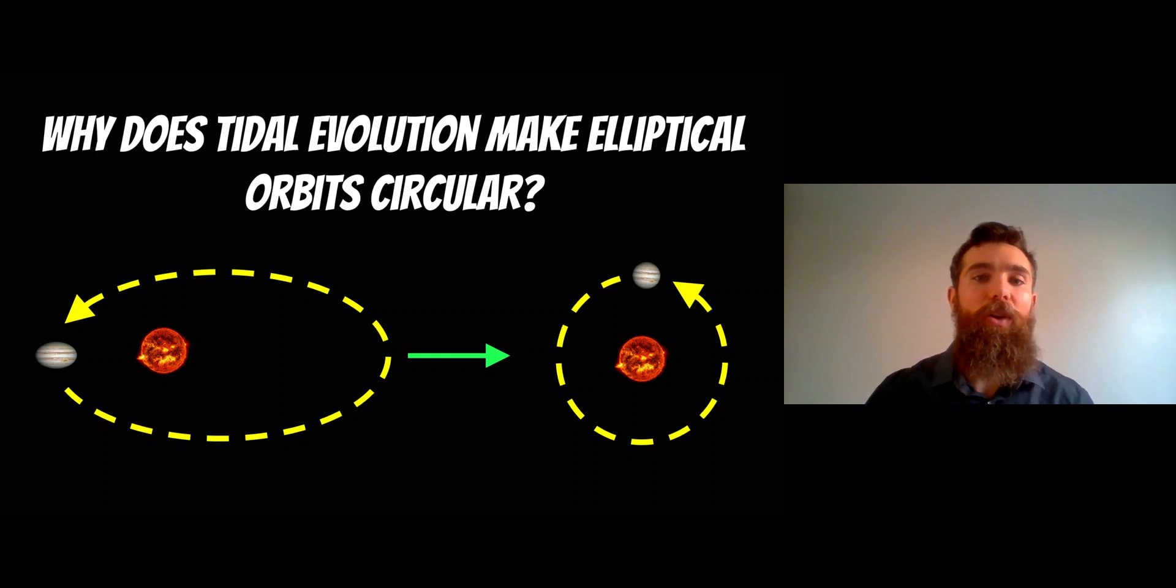Welcome to this video where we're going to look at how tidal evolution can make elliptical orbits circular. This is applicable for planets orbiting stars as well as moons orbiting their planets.